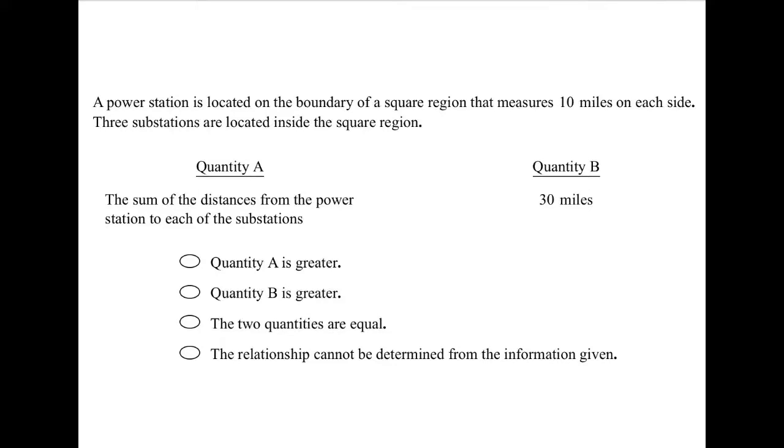This question says a power station is located on the boundary of a square region that measures 10 miles on each side. So I would go to my scratch paper, draw out a square, label it with 10 on each side, and I would just put a random power station somewhere. Let's just say that that dot represents a power station on the boundary of a square region.